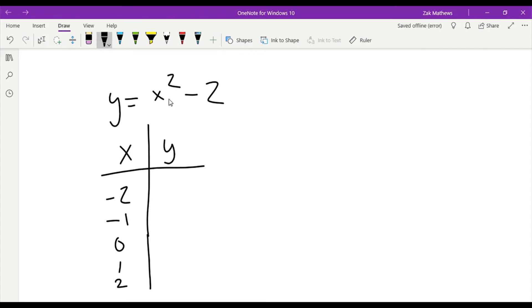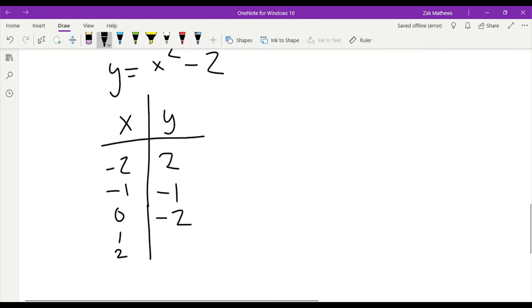Negative two squared, negative two times negative two is positive four, minus two gives me two. Negative one squared is one, minus two is negative one. Zero squared is zero, minus two is negative two. One squared is one, minus two is negative one. And then two squared is four, minus two is two. So this value is actually repeated.